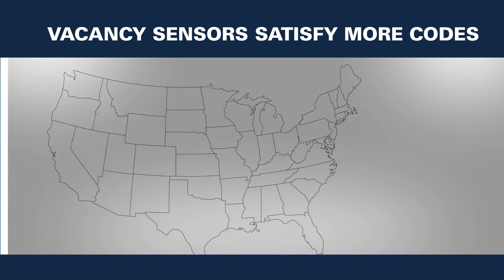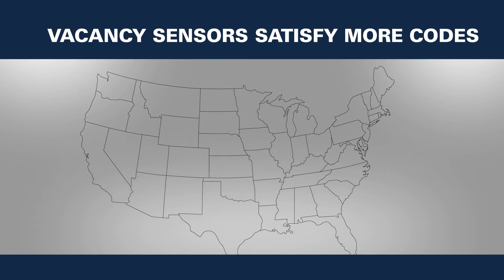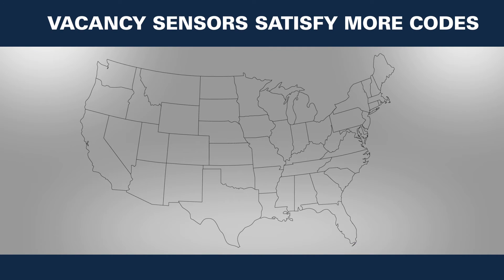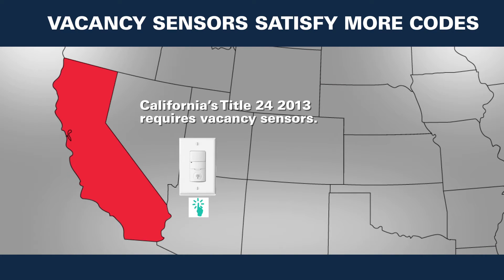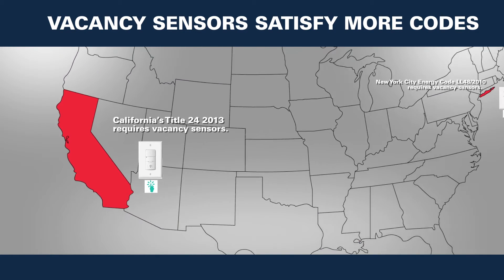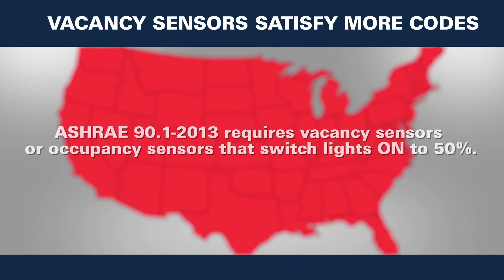Vacancy sensors also satisfy more building codes. They are required by codes in New York City and California's latest version of Title 24. And vacancy sensors are an easy compliance option for the latest ASHRAE 90.1 standard, which requires manual control in many spaces to bring the lights to full on.